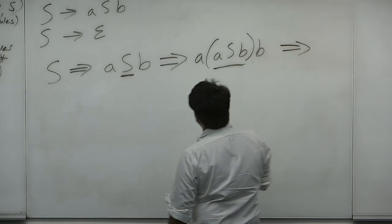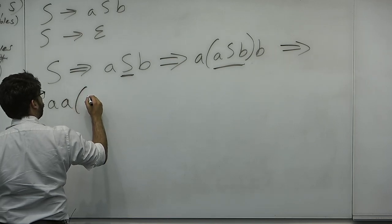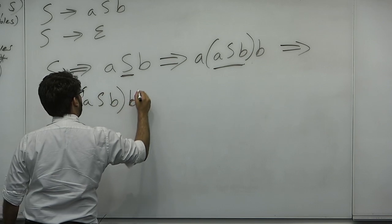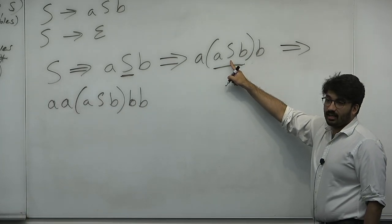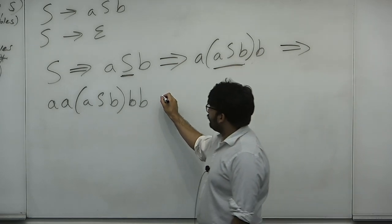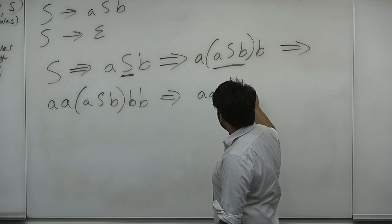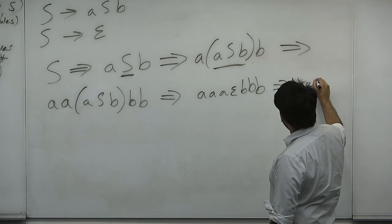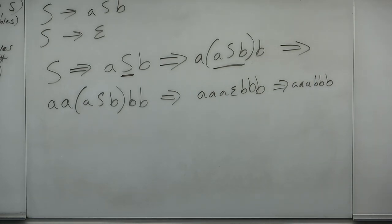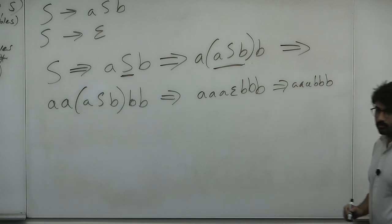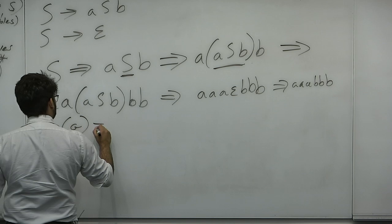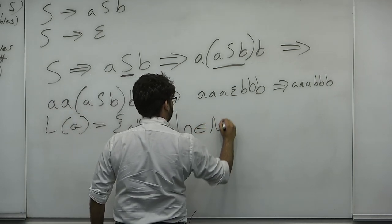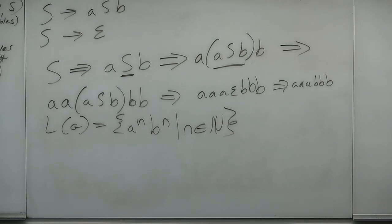Continuing the example: after three applications of S → ASB and then S → ε, we get AAABBB. What language does this grammar produce? Considering all possible productions, it produces A^n B^n for n in the natural numbers. We already see that context-free grammars are not regular — this was a language we proved using the pumping lemma is not regular. So already we see that context-free grammars can do something different from regular languages.